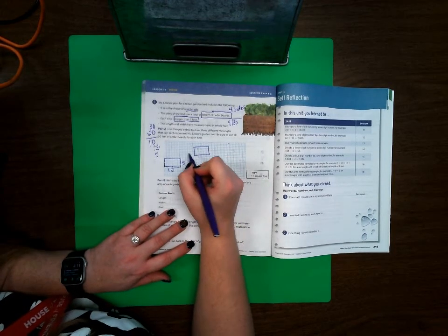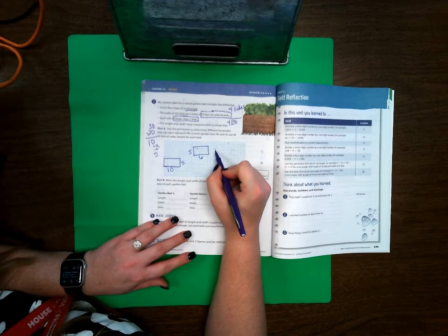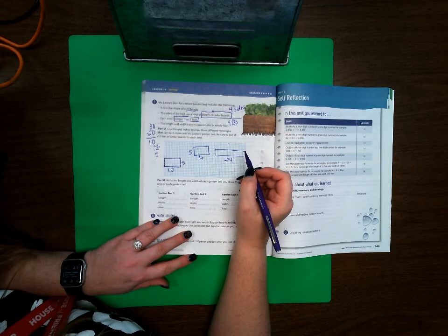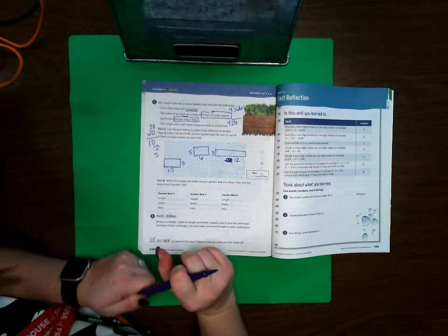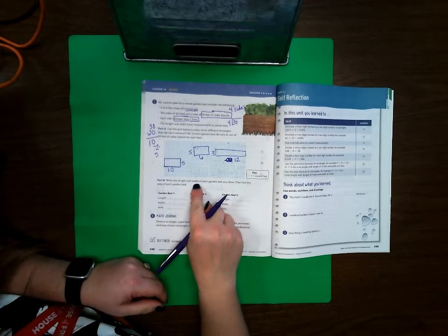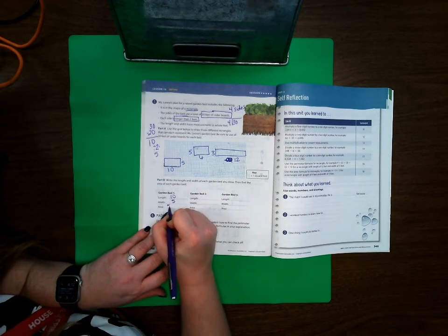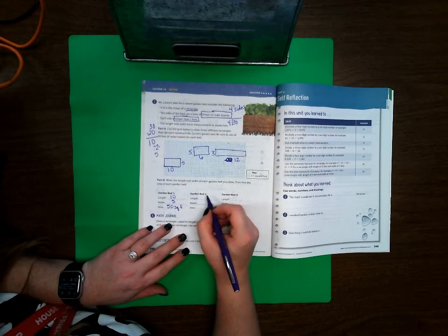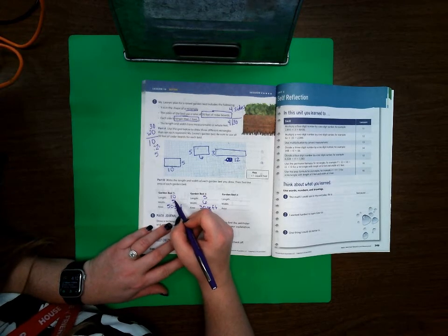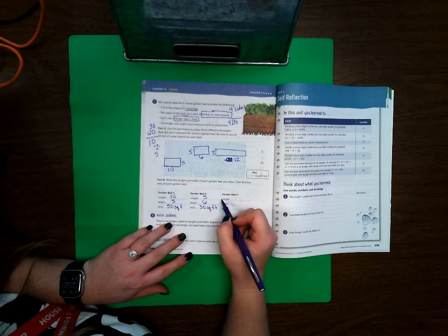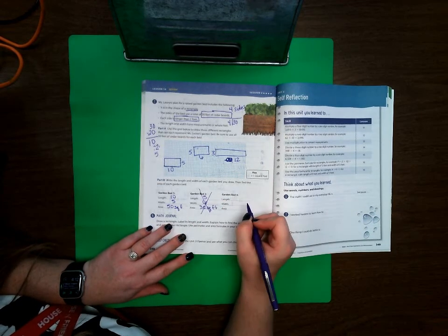Write the length and width of each garden bed you drew. Then find the area of each one. We have a 10 by 5, so the area would be 50 square feet. We have a 5 by 6, so it would be 30 square feet. This one is correct.